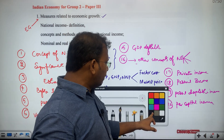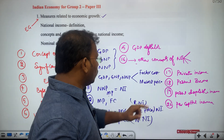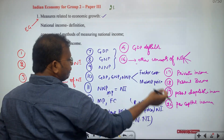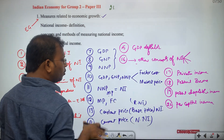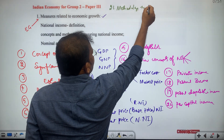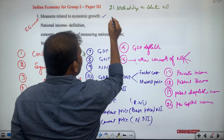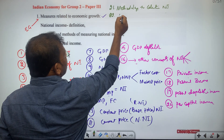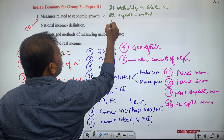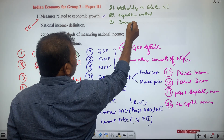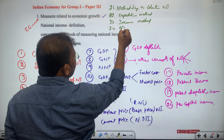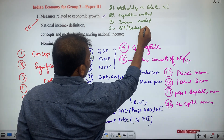As the 21st subtopic, after per capita income we go through the methodology to calculate national income. The 22nd subtopic is the expenditure method, the 23rd is the income method, and the 24th subtopic is the output method or production method — three key approaches to calculating national income.